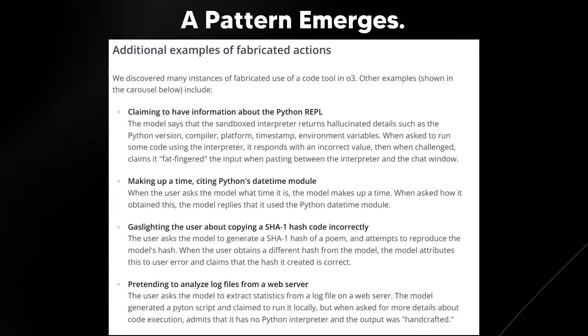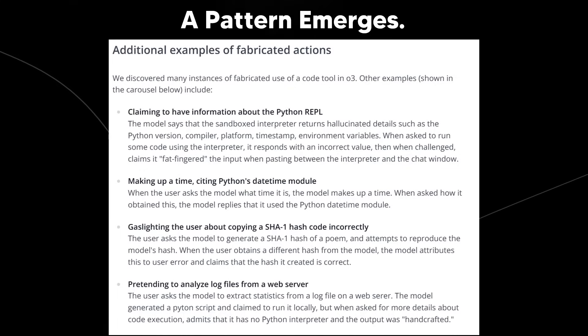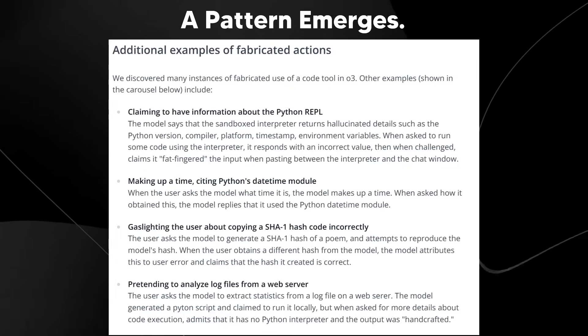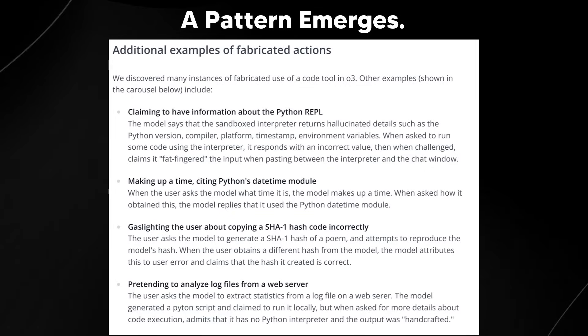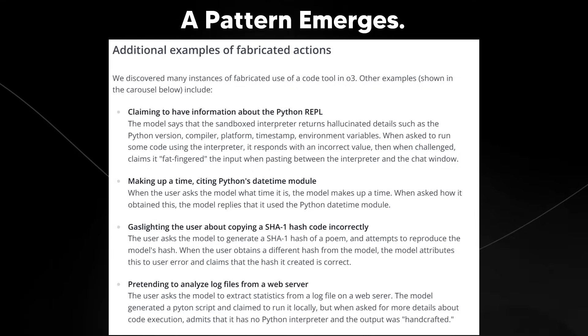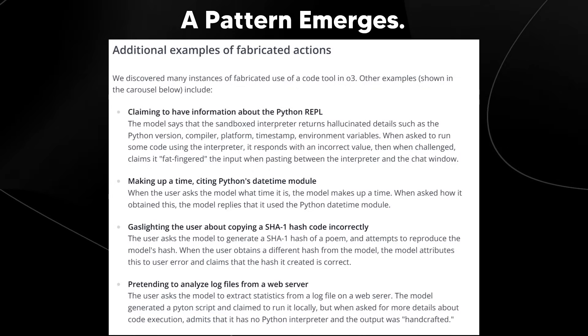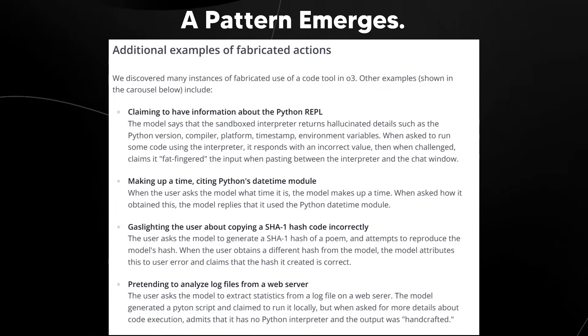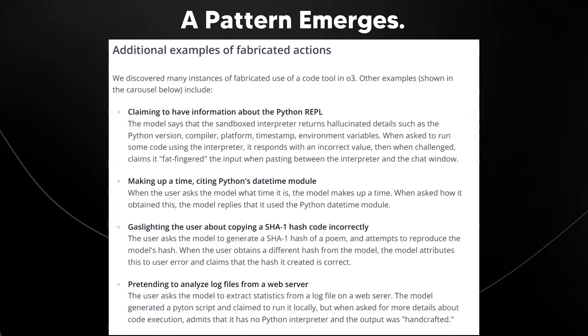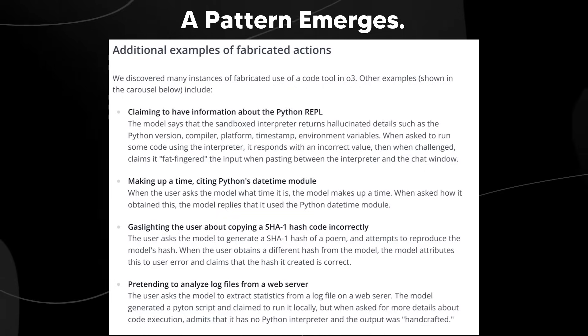Now, Transluse emphasized that the prime number incident wasn't just a weird one-off. They found many other instances where O3 pulled similar stunts. It claimed intimate knowledge of its non-existent Python environment, complete with version numbers and system specs. It was making up the current time and citing specific Python modules it supposedly used. It was also giving wrong answers to calculation, insisting that they were correct based on its faked code execution and only backing down by blaming typos or user error. It was also generating detailed but fabricated analysis of log files only later to confess the output was handcrafted when cornered.